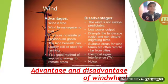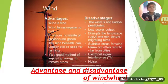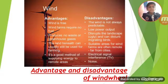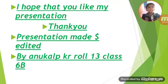The wind is not always predictable. Low power output disrupts the landscape and can disturb migrating birds. Suitable areas for wind farms are often located far from cities. Electrical signal interference with TV, and noise, are the biggest disadvantages of the windmill.